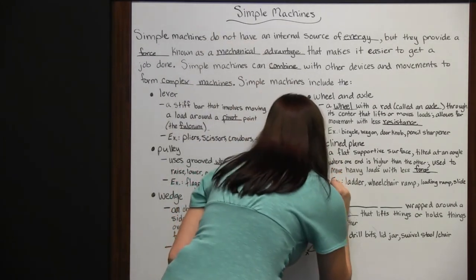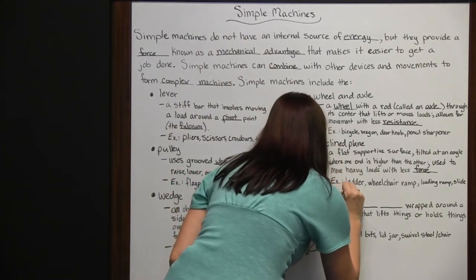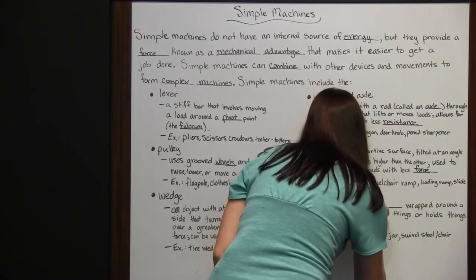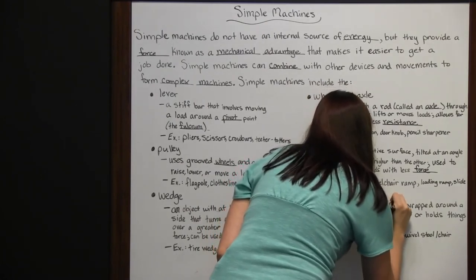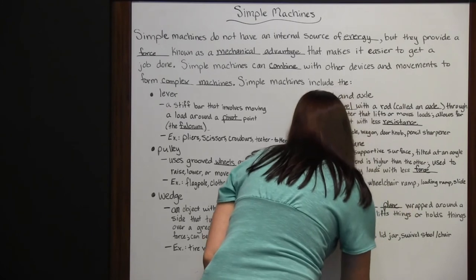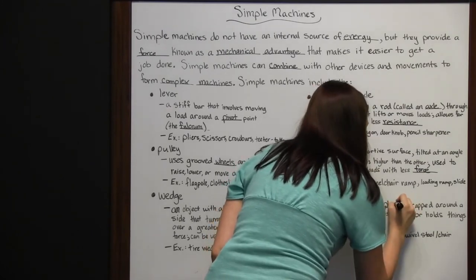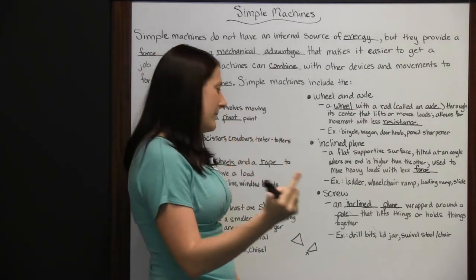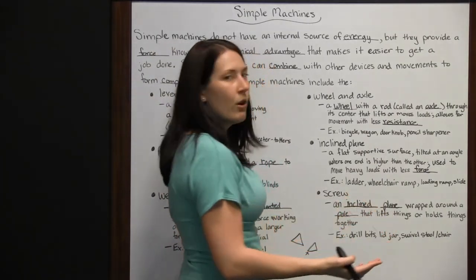Last we have the screw. The screw is in itself an inclined plane that wraps all the way around a pole. You've got your center pole with that inclined plane that wraps all the way around it. It lifts things or holds things together.